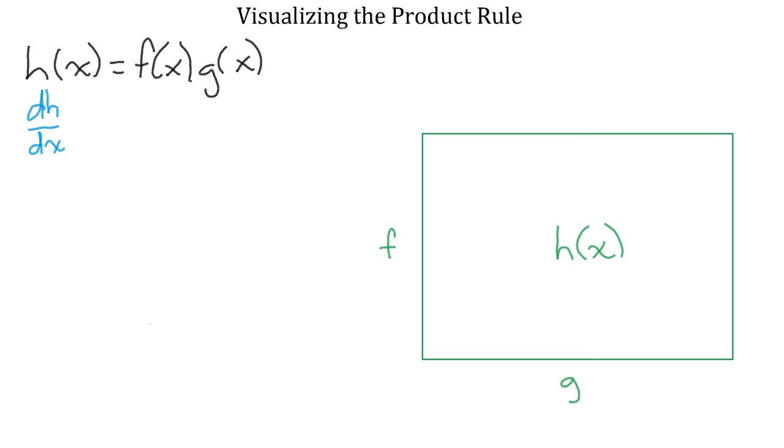So our goal here is to find dh over dx, that is the derivative of h at x. We can visually represent the change in h, or dh, by increasing the area of the rectangle. We can increase the length of each side slightly, so the increase to the side f of x is df, and the increase to this side is dg. These values will become infinitesimally small as dx, the change in x, decreases.